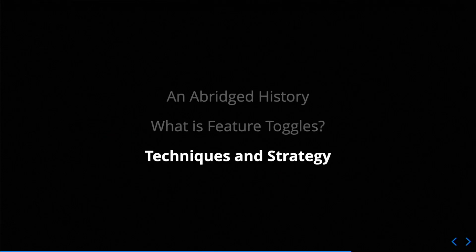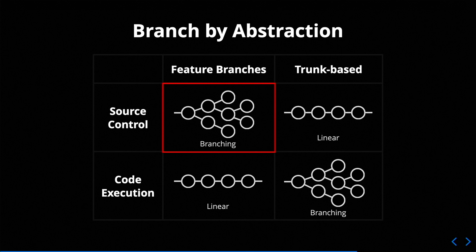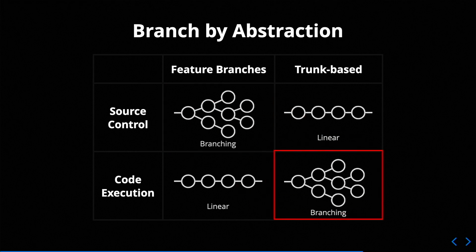Now let's talk about some techniques and strategy. If you remember branching by abstraction and trunk-based development — before, when we had feature branches, we put all of our branching into source control, with lots of branches running different versions of the software, which was hard to manage with many merge conflicts. But our code itself had linear execution paths. When we moved to trunk-based development, we didn't solve that problem — all we did was move it. We moved our branching into our code. That's not necessarily bad — code's easier to work with, we get more flexibility and control — but we just moved the problem. That's important to know.